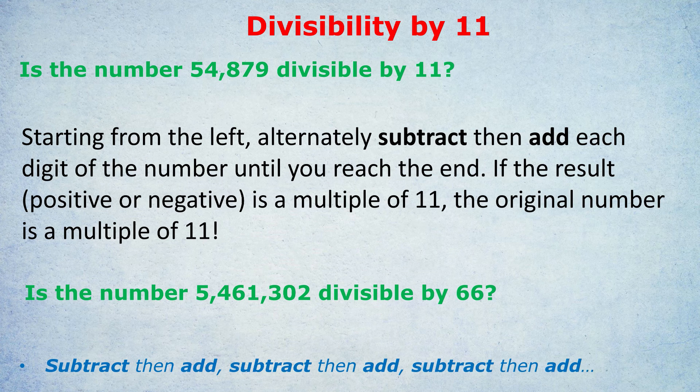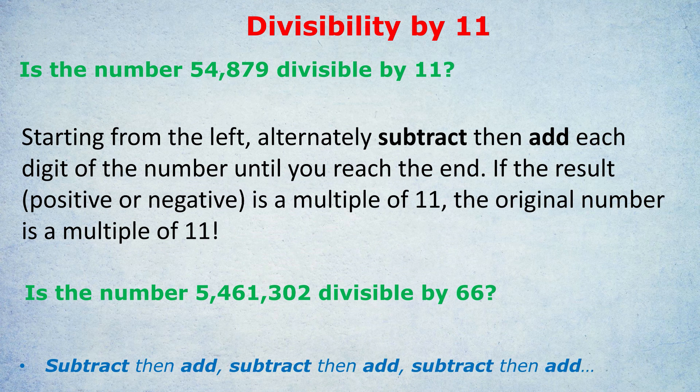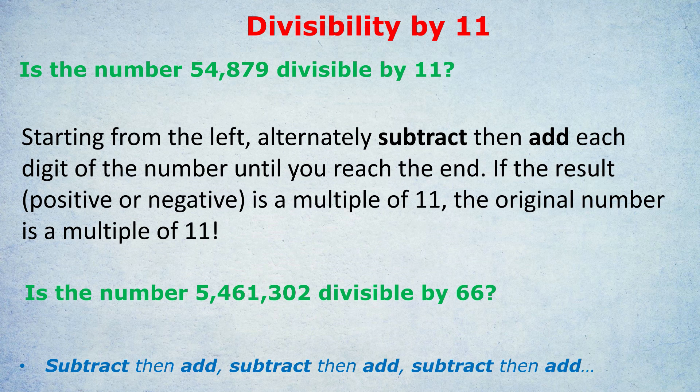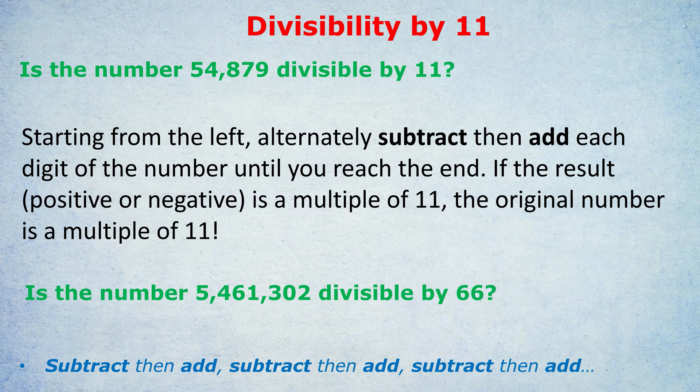So first box is ticked. It's definitely divisible by 6. Now the question is, is it divisible by 11? Well, let's use our trick. We do the first number, subtract the second number. So 5, take away 4, is 1. Add the next number, 6, so we get to 7. Take away 1, get to 6, plus 3, 9, take away 0, 9, add 2, 11. And 11 is, of course, a multiple of 11. By the way, it doesn't always have to be 11. It could be 22, 44, minus 33. Any multiple of 11 works.